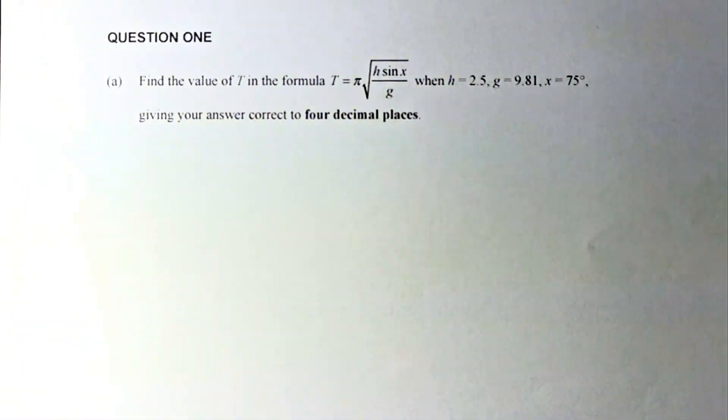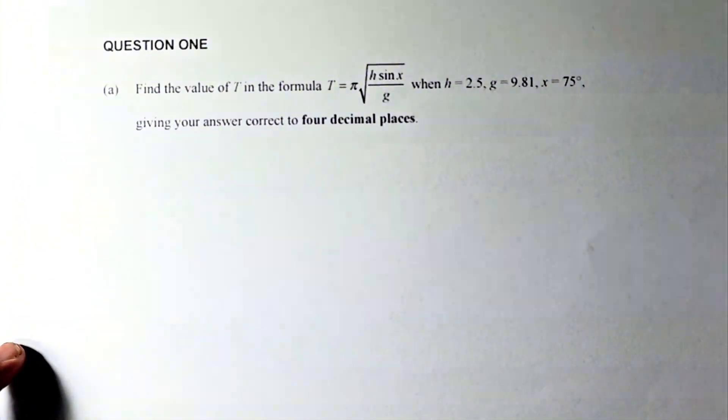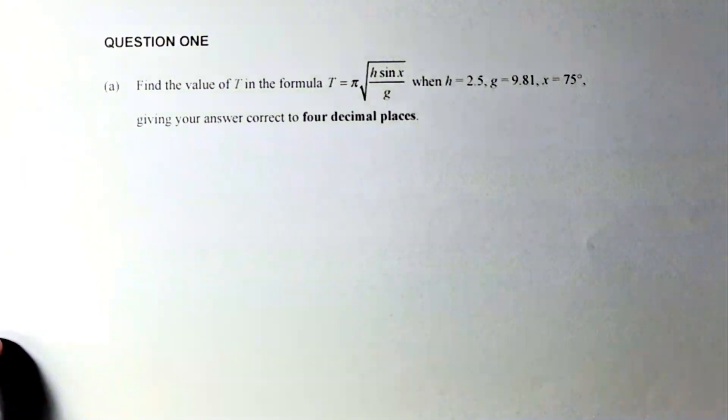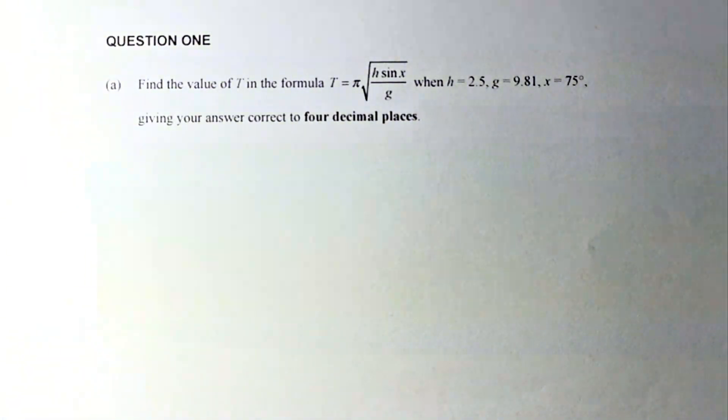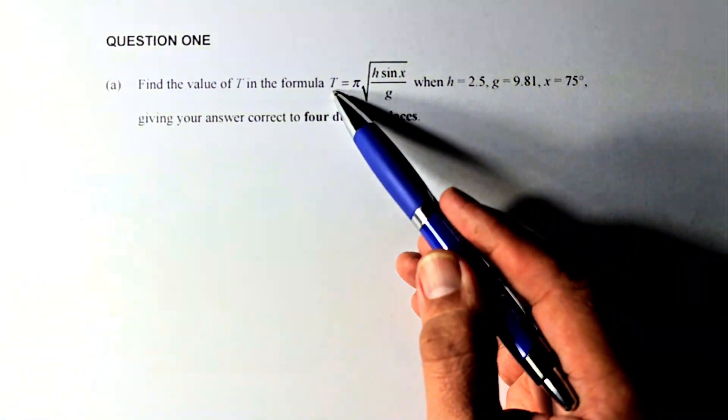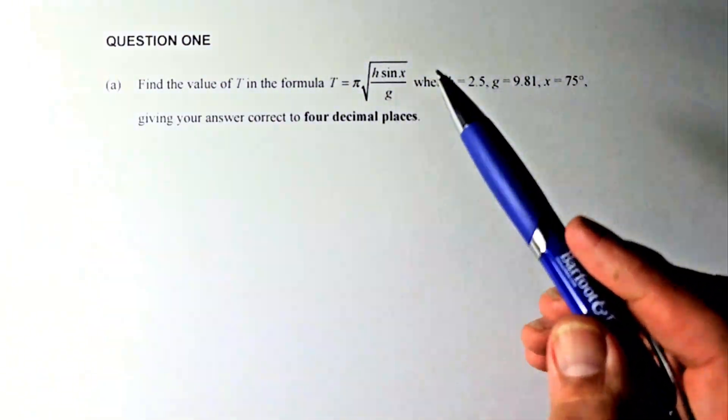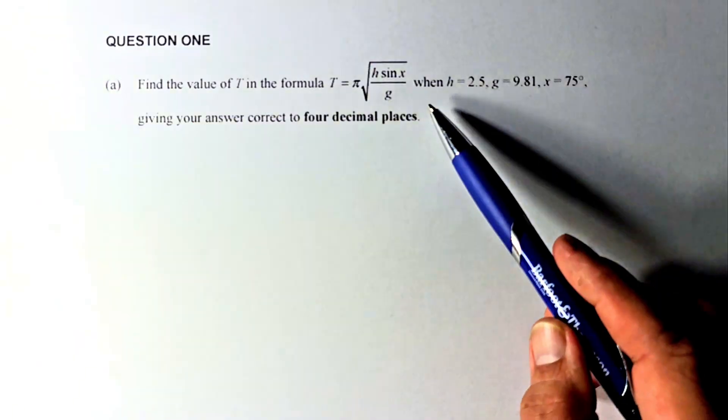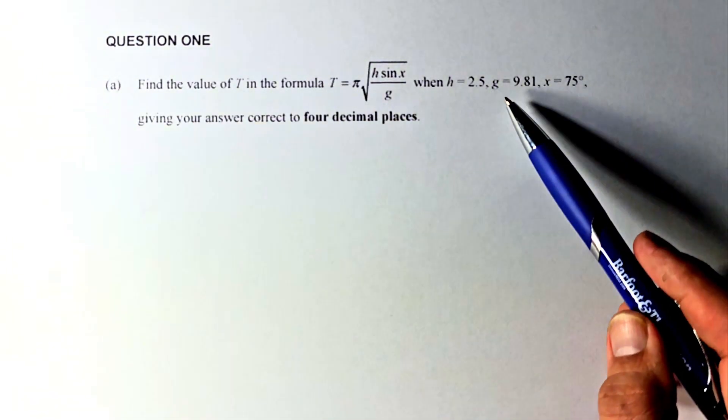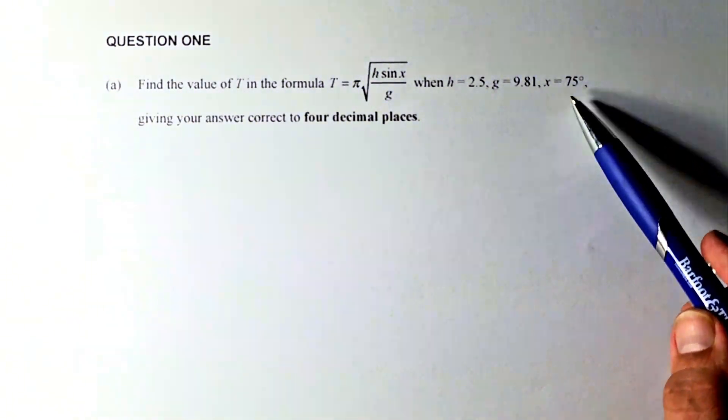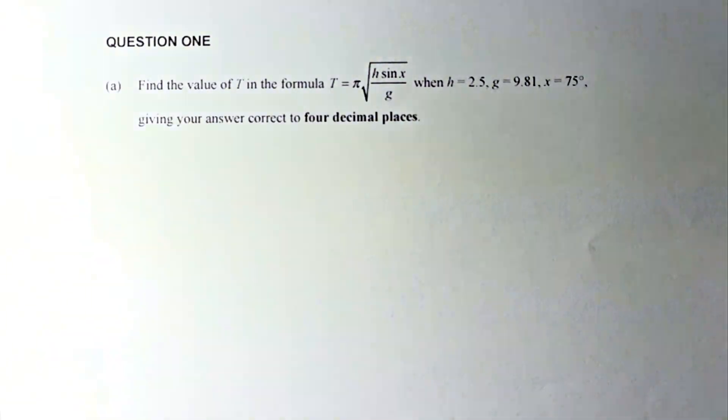So the question sounds like this. This is a substitution question and we shall try to solve them. Find the value of T, the capital T, in the formula T equal to pi square root of h sin x divided by g when h is 2.5, g is 9.81 and x is 75 degrees, giving your answers correct to 4 decimal places.